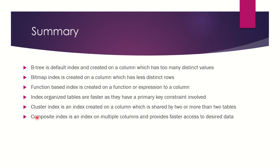We also talked about the composite index, which is nothing but creating an index on two or more columns, which helps to retrieve fewer rows and provides faster access to data. So that was all about the index and the types of indexes, and we'll talk about RBO versus CBO in the next module.